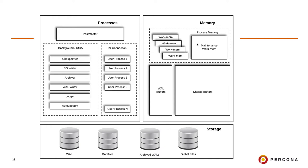You also have work_mem, maintenance_work_mem, WAL buffers, and shared_buffers — all of which come under memory and will be using RAM. You also have data files, write-ahead logs, and if you archive these write-ahead logs you call them archive WALs, which you may be storing in some remote or cloud storage. You also have globals, tablespaces, and a lot of other files — all of these come under storage.